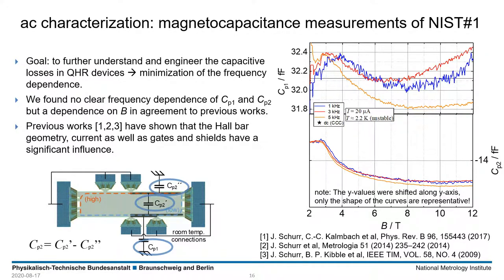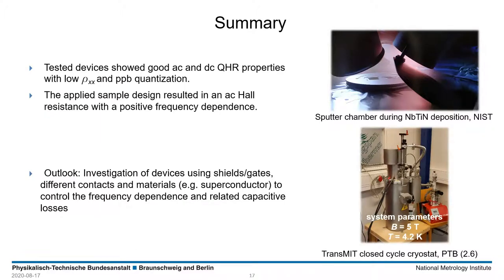For example, it would be interesting to have a sample with the same design but using normal metals only — such as gold instead of superconducting materials — for a direct comparison. In summary, we had a successful measurement campaign with the devices from NIST. All devices worked well at AC and DC with low longitudinal resistances and ppb-level quantization. Our future work will include the investigation of shields, gates, different contact materials, and sample designs in general to find reliable ways to control the frequency dependence and related capacitive losses in the devices.